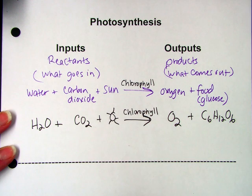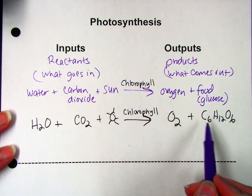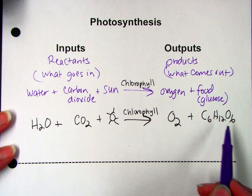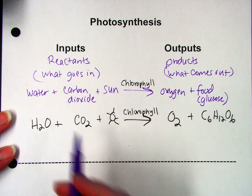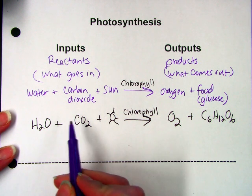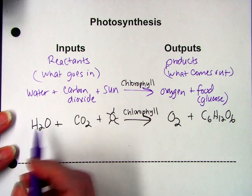And when you look at these equations, they're really not balanced. Because if you look here, we have six carbons, 12 hydrogens, six oxygens. But we don't have that same number of carbons, hydrogens, and oxygens on this side. So if you really wanted to make this a balanced equation...